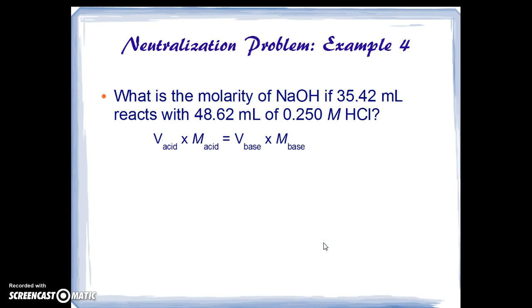Again we've got the volume times the molarity of the acid equals the volume times the molarity of the base at the equivalence point. And if we solve for the molarity of the base we see that we multiply the volume and molarity of the acid and divide by the volume of the base. We then plug in the numbers in units 48.62 times 0.250 molar of the acid. We divide by the 35.42 milliliters of the base and we get 0.343 molar.